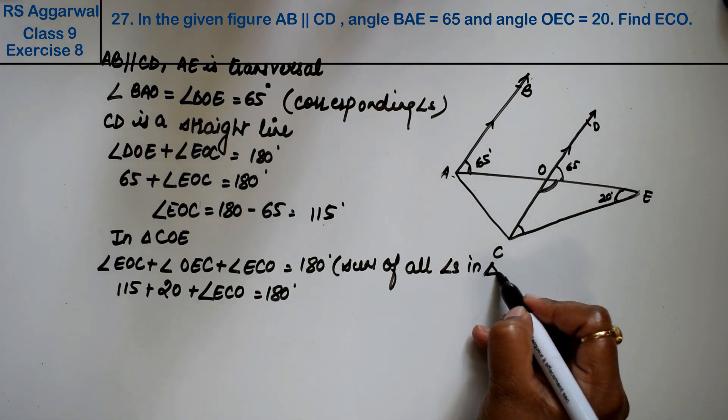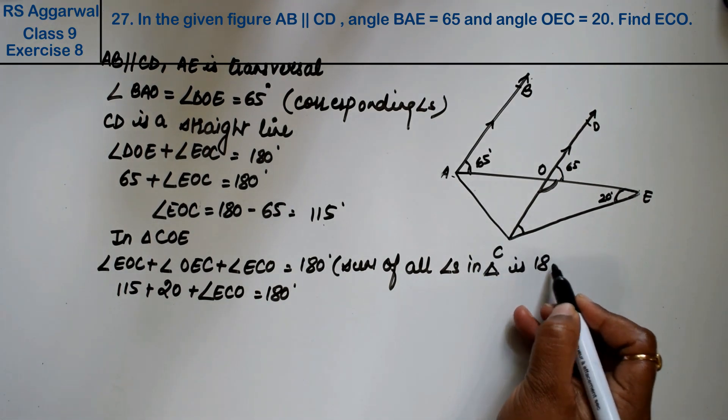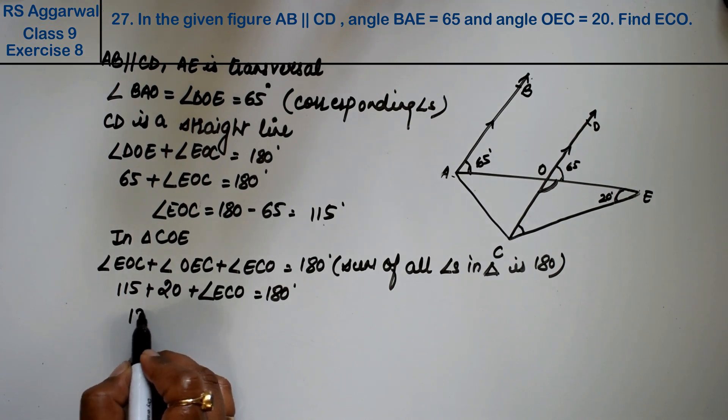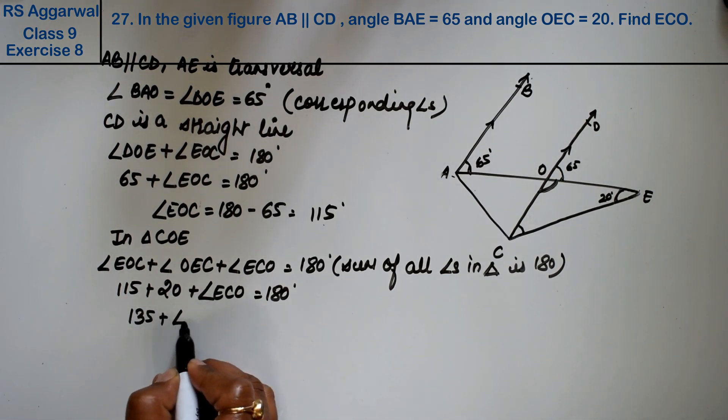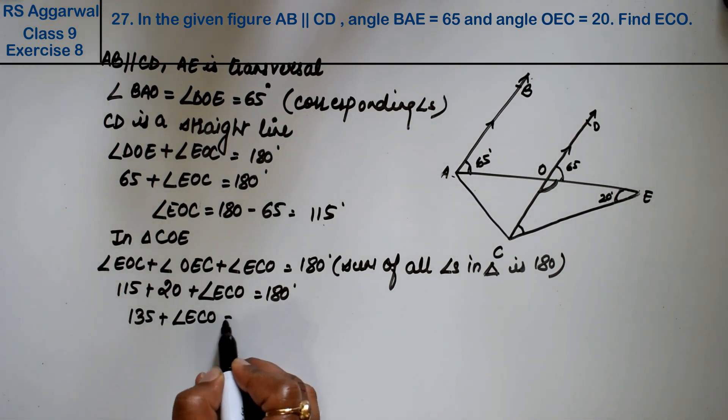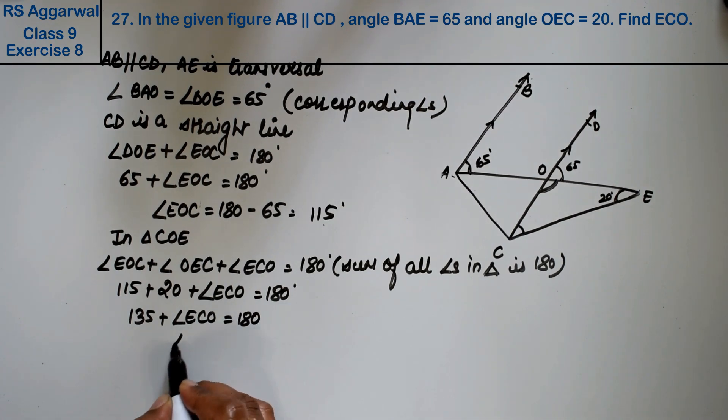So we have 115 plus 20, that is 135 plus angle ECO equals 180. So how much is angle ECO? 180 minus 135.